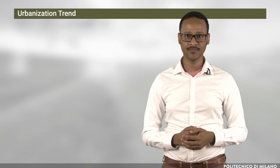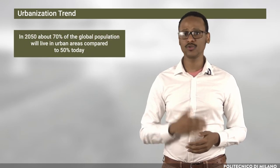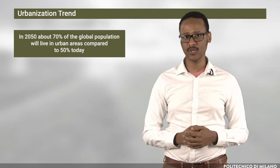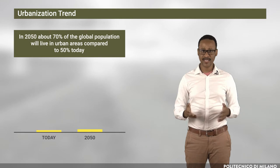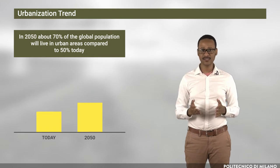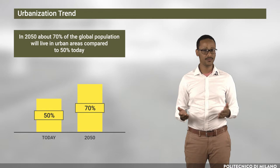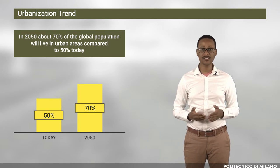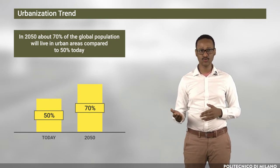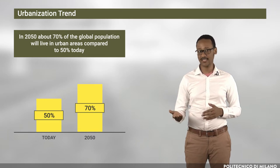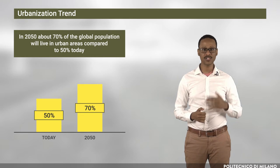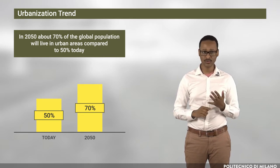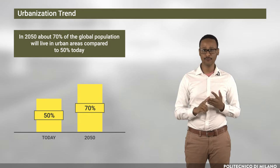The other major push factor is the urbanization trend. By 2050, about 70% of the global population will live in urban areas, compared to 50% today. Urbanization affects agricultural production in multiple ways: first, it leads to labor scarcity in rural areas where agricultural production naturally takes place; and second, it changes the consumption habits of the population in terms of amount, quality, and variety of food demanded.